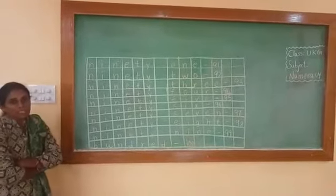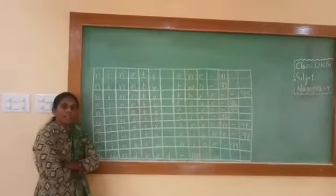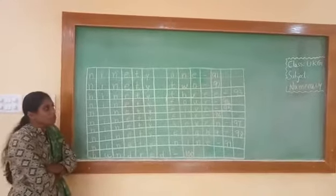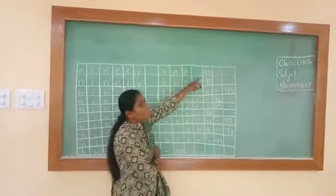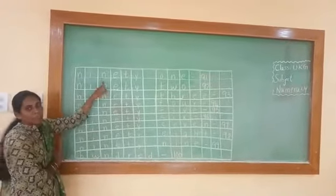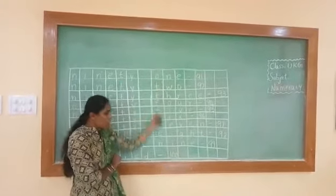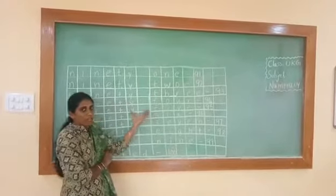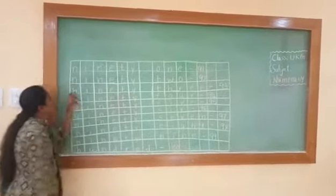Good morning children. In the previous class we have learned 81 to 90 numbers. So today we are going to learn 91 to 100 numbers. Children already know 90 number and already know 1 to 9 numbers. So today we are going to write together, okay? Look here.